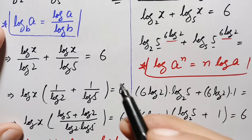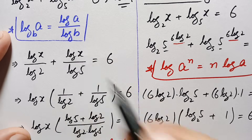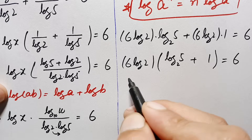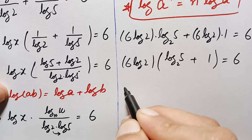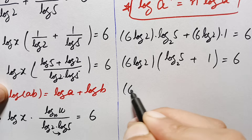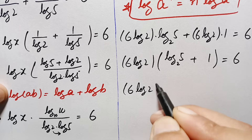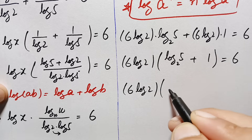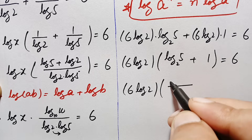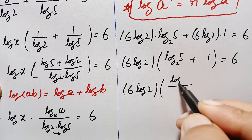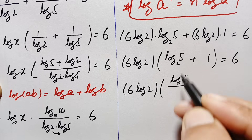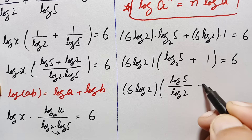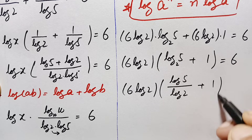Inside the parenthesis, we apply the change of base property. Log of 5 with base 2 becomes log of 5 divided by log of 2. So this is 6 times log of 2 times (log of 5 divided by log of 2 plus 1) is equal to 6.